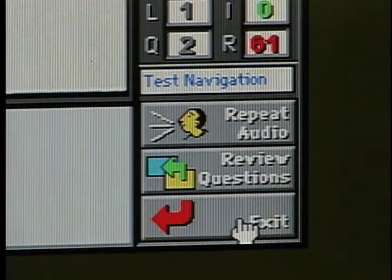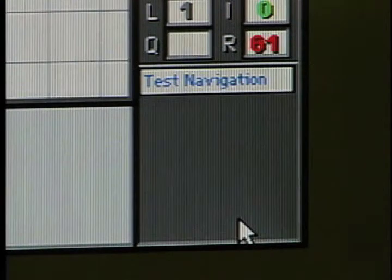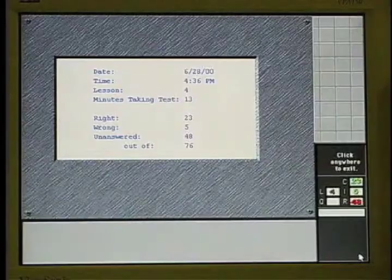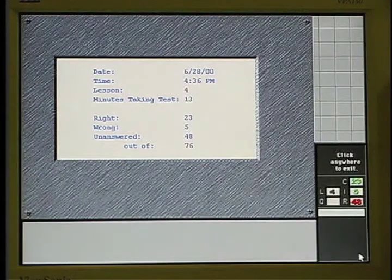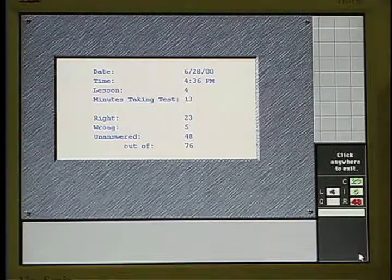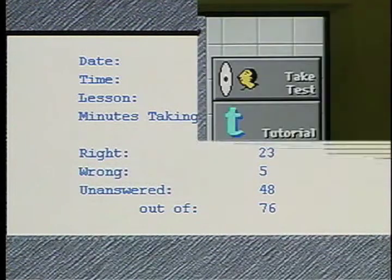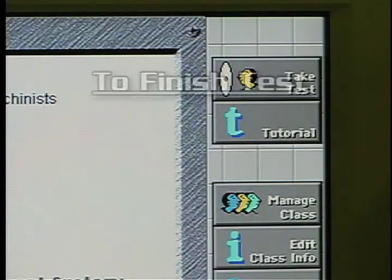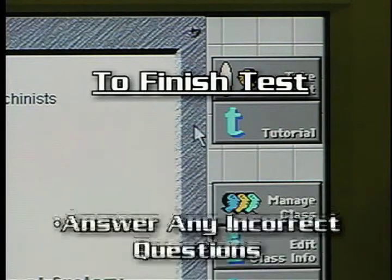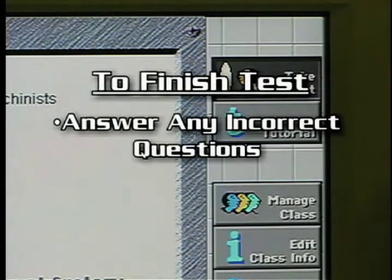The exit button allows the student to stop the test at any time. When exit is clicked, the computer updates the individual's file to indicate how many minutes they spent on the test and how many test items they completed correctly and incorrectly. When the person returns to the test, they will be asked those questions they missed on their previous attempt as well as any remaining unanswered questions.